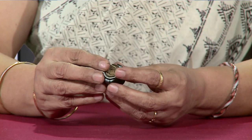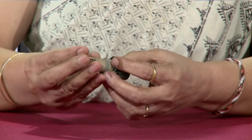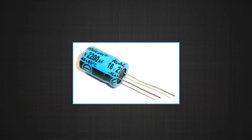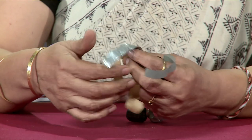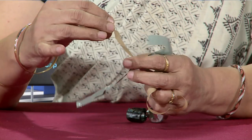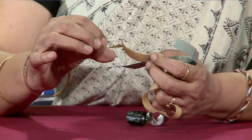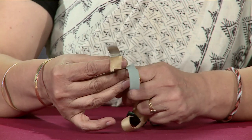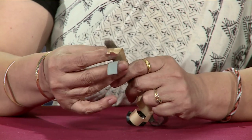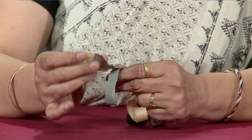Let me cut open this capacitor and show you what it consists of. If I take out these parts of the capacitor, this capacitor consists of two metal plates, and they are separated by a paper strip. This paper serves two purposes: one is that it does not allow the conducting plates, which will get charged, to come in contact. Second, it will also act as a dielectric and increase its capacitance.